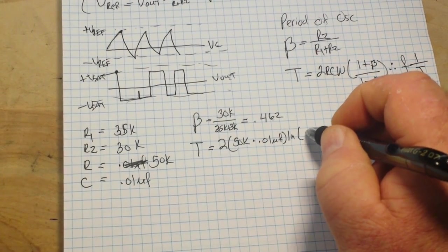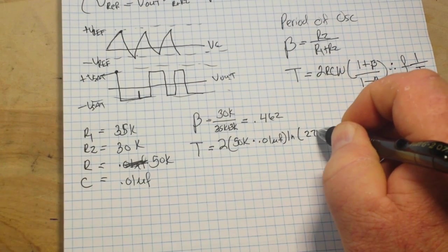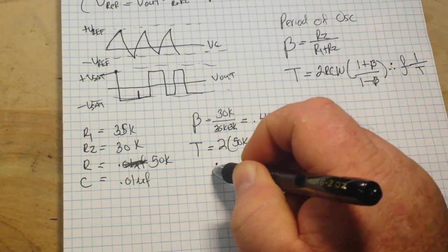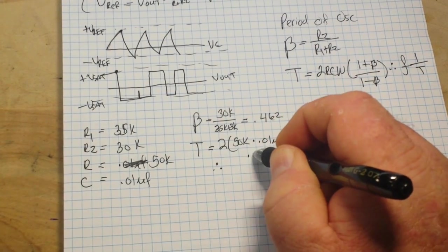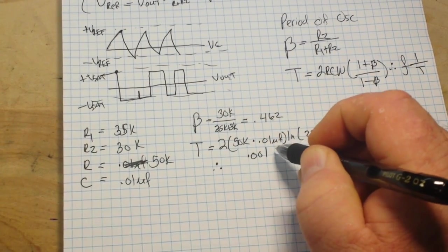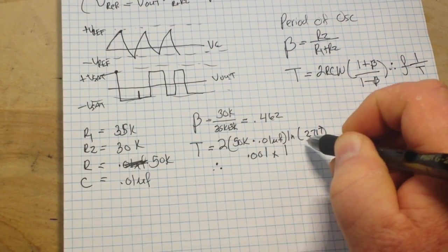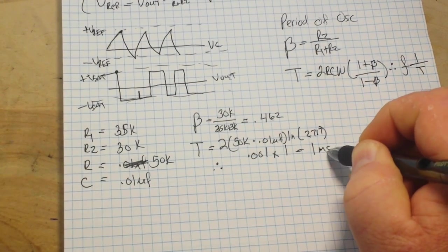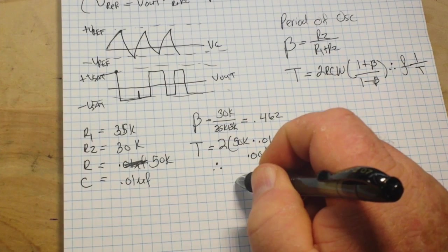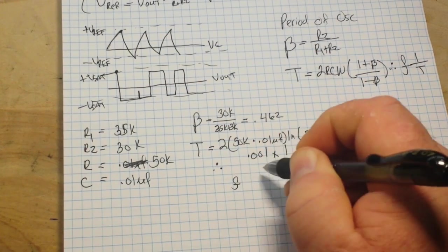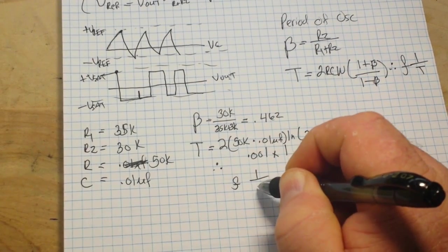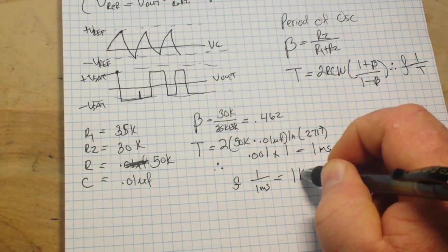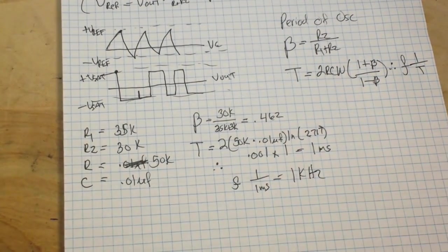which is 2.717. And that is going to give us 0.001, or 1 millisecond. And then of course, our frequency is 1 over 1 millisecond, or 1 kilohertz.